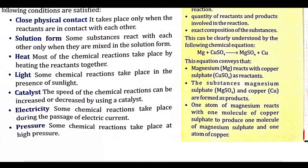Some chemical reactions take place in the presence of sunlight. Next is the catalyst — the speed of a chemical reaction can be increased or decreased by a catalyst. A catalyst is something you add during the chemical reaction that increases or decreases the speed of the reaction.